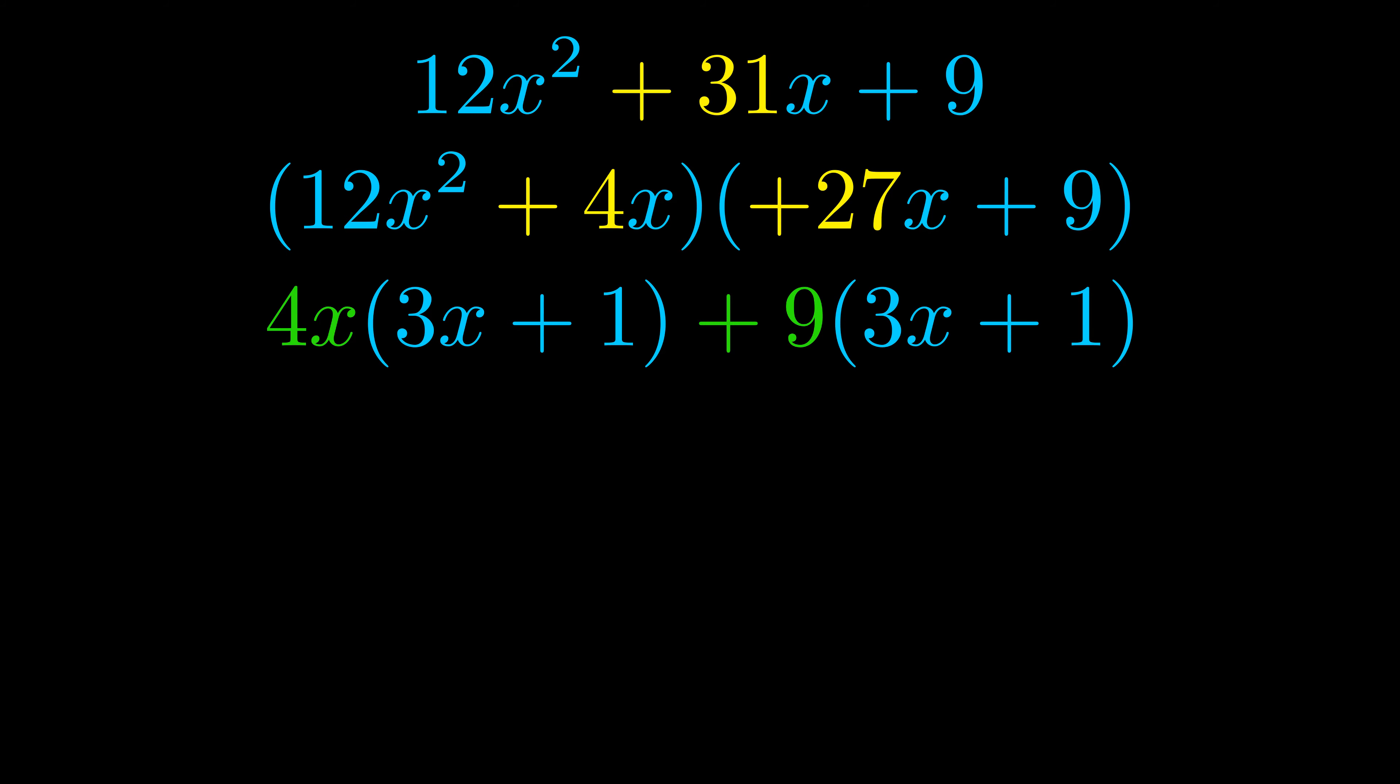Notice also how what remains inside the parentheses is the same in both cases. The blue values are the same. Those blue values will become one of our factors, and we will combine the two green values, the GCFs that we pulled out, to get the other one. And that is our fully factored equation.